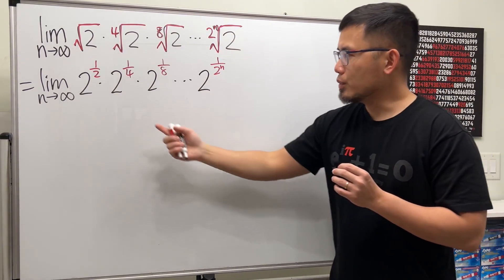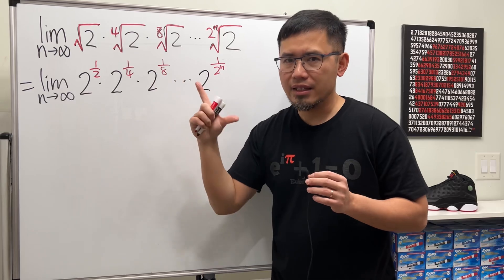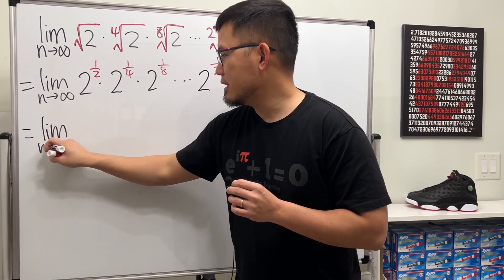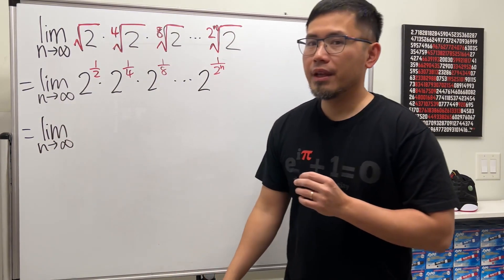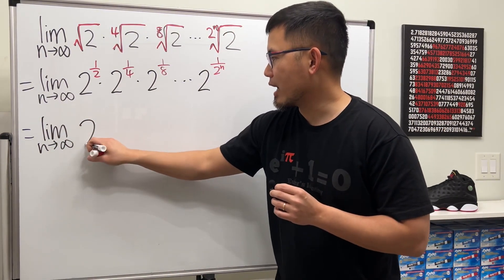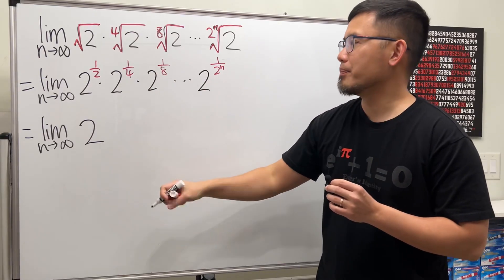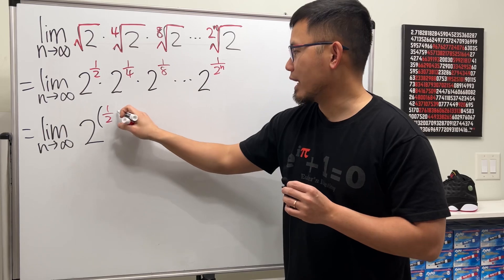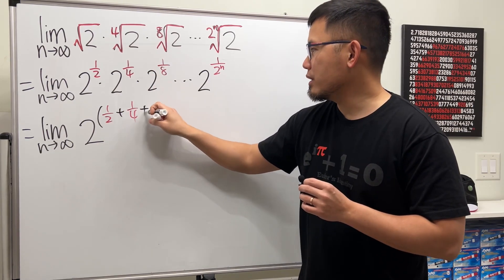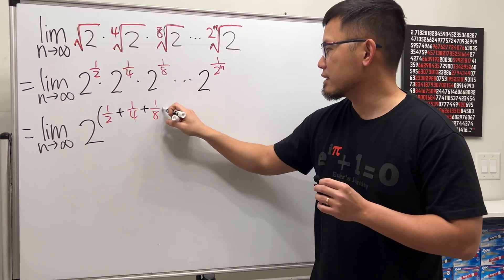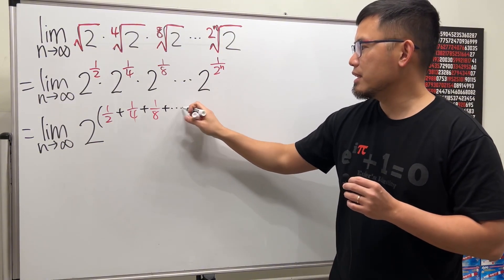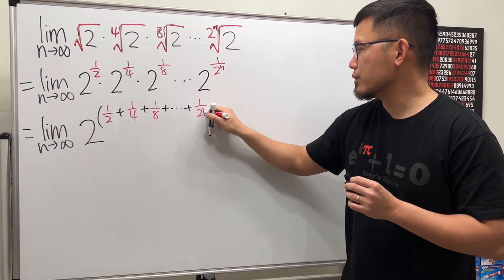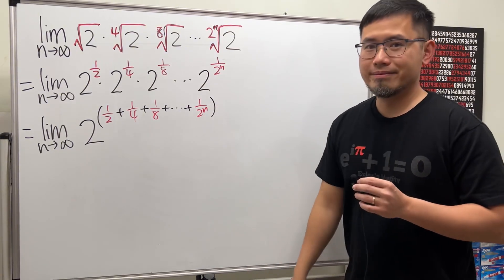And now what? Notice they are all multiplying, we can add the exponents together. So this becomes the limit as n goes to infinity, and we just have to write down the 2 one time. But then all the exponents we just add them up. So we will have parentheses. The first exponent is 1 half, the next one is 1 over 4, and the next one is 1 over 8, and then the next one is 1 over 16, and so on. Lastly, we just have to add this, which is 1 over 2 to the nth power.